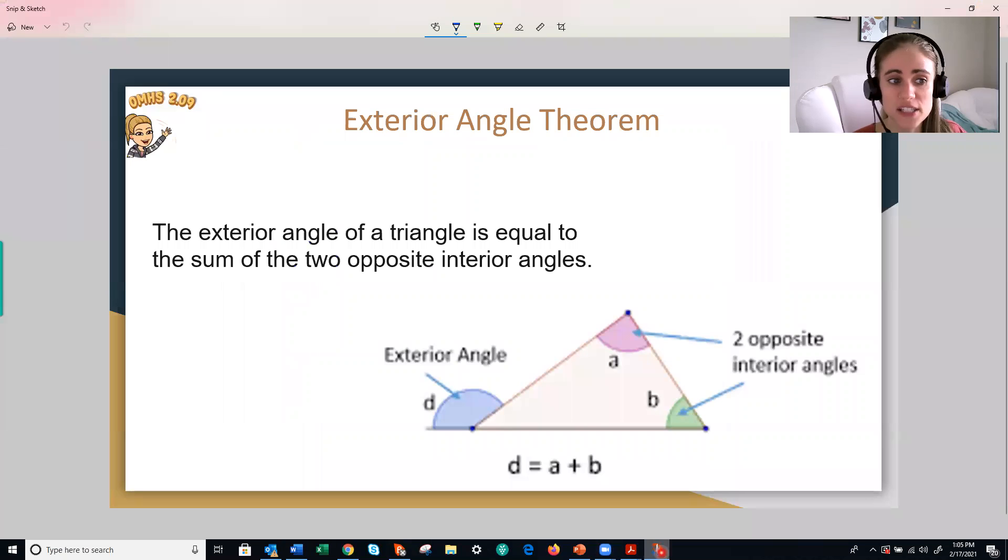So our Exterior Angle Theorem tells us that the exterior angle of a triangle, so this right here, in this case angle D, notice how it's on the outside, it's on the exterior of a triangle, is equal to the sum. What does sum mean again?